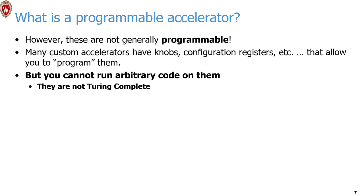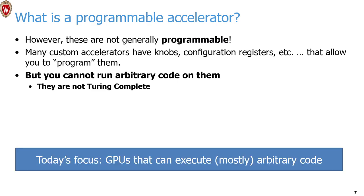Hardware acceleration in the modern day is everywhere — we have specialized chips for video and image encoding and decoding, cryptography, Bitcoin mining, genomics, database accelerators, network accelerators, and of course machine learning accelerators in many different flavors. As Hennessy and Patterson called it, we're in the second golden age of architecture, where we can design efficient hardware for lots of specific problems. The challenge is that many of these accelerators are generally not programmable — they may have some custom knobs but they're not Turing complete.